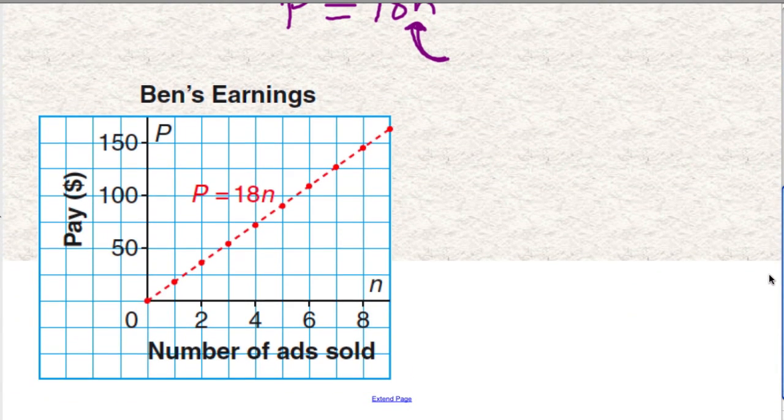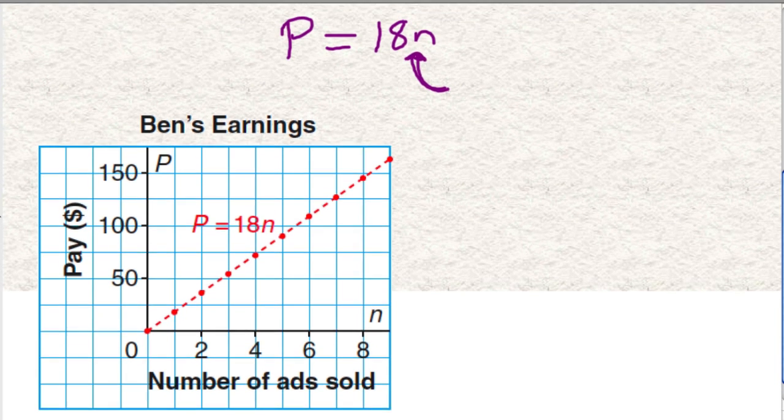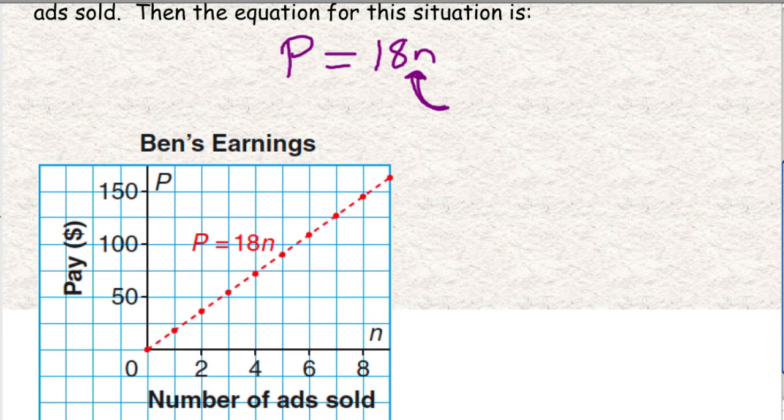So here is Ben's earnings. $18N. That's what it would look like. The 18 is the rate at which he's paid. So that means that his slope, this line has a slope of 18. So it's a fairly steep line. It's going up by 25 up the side.